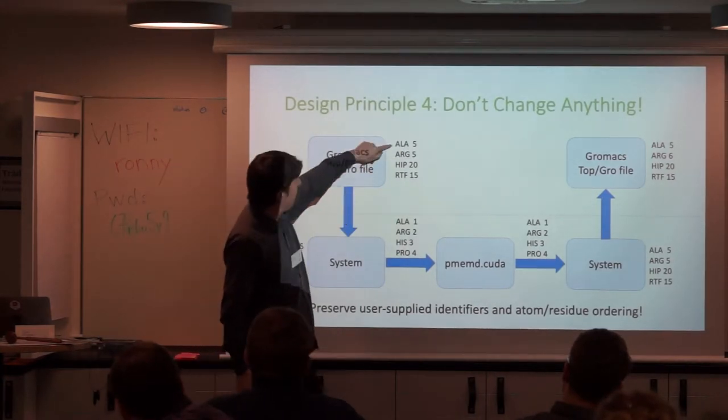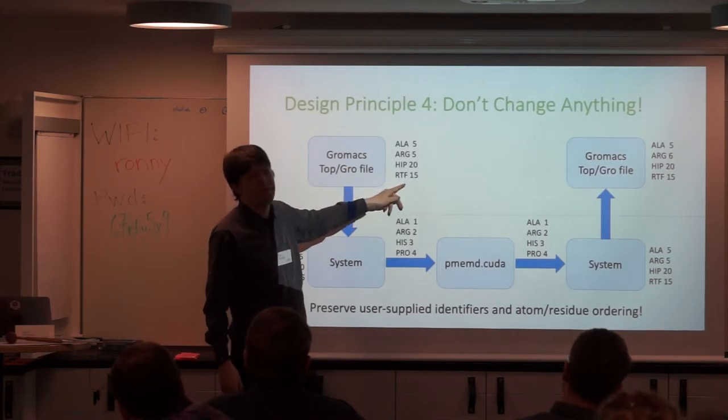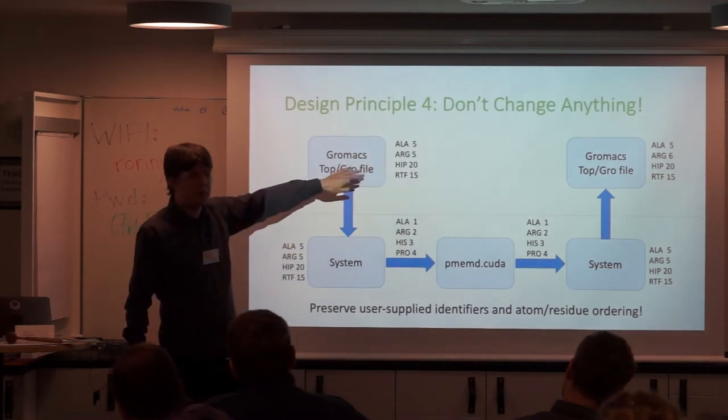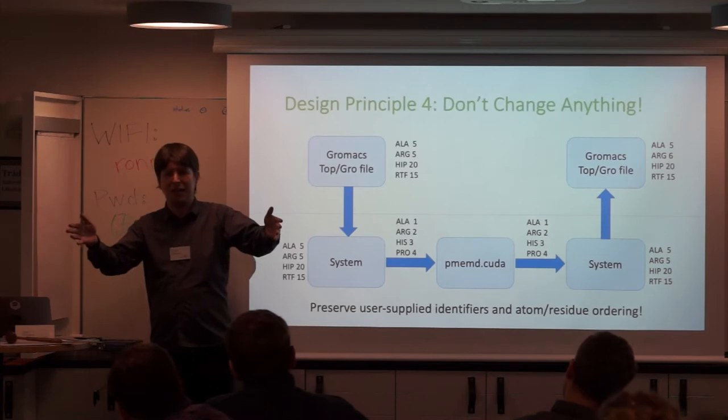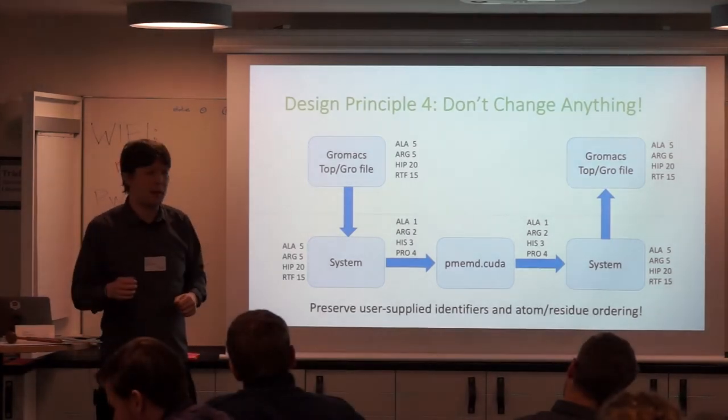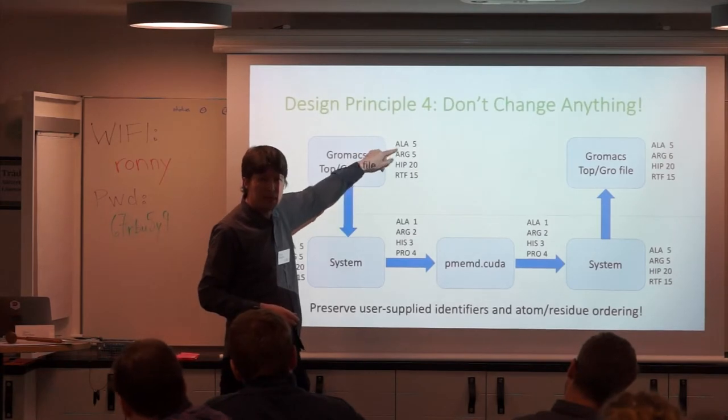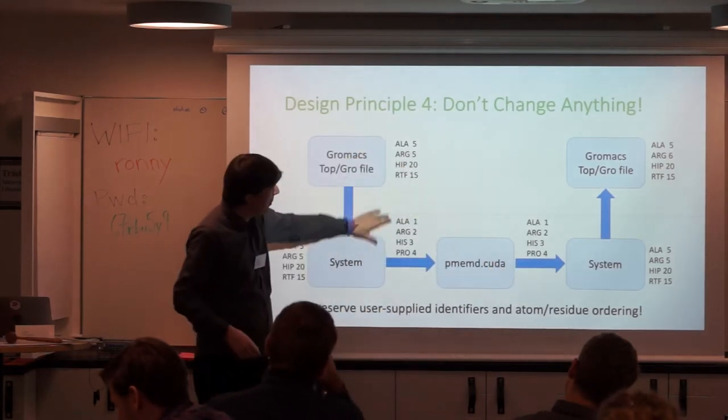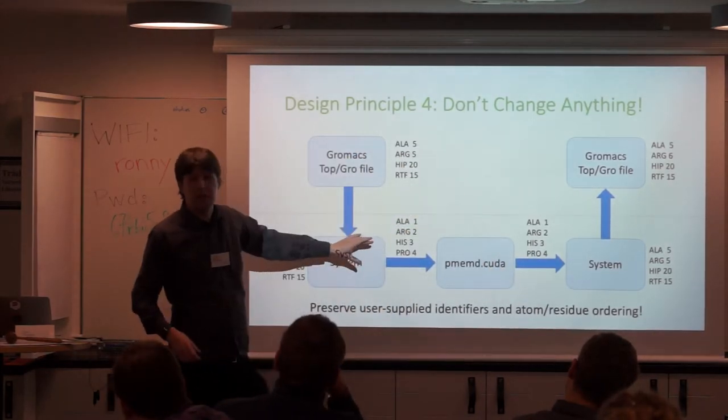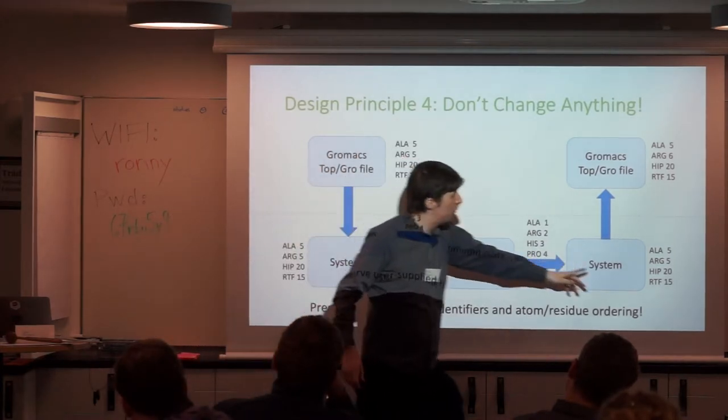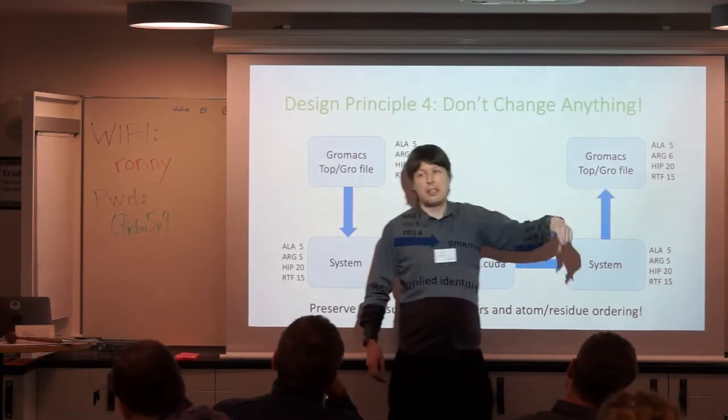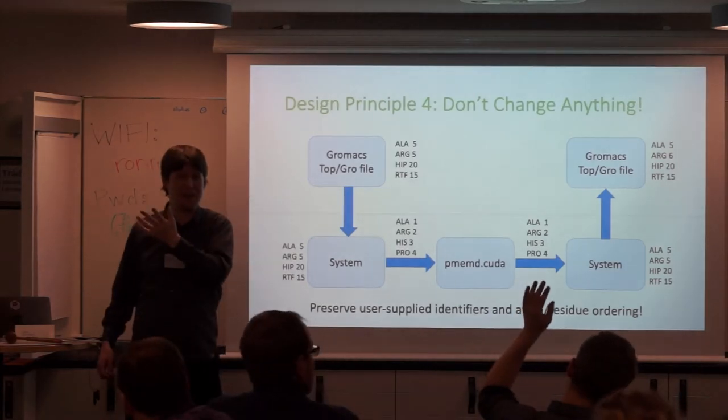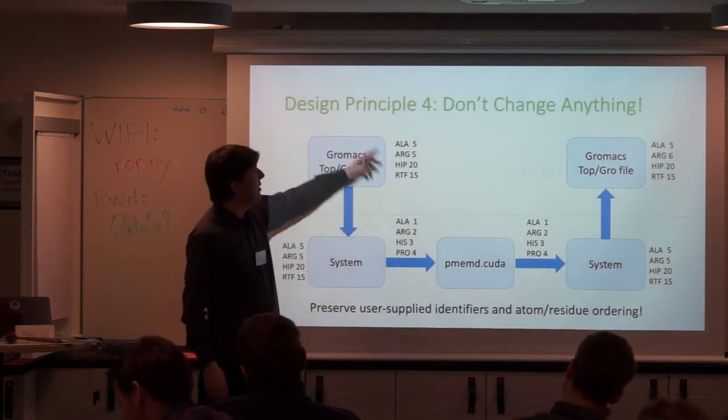But this goes further with don't change anything. This person's a bit silly. They've got alanine 5, arginine 5, HIP 20 and RTF 15 as their residue names and numbers. We all know that's rubbish. And indeed if you try and throw that through PMEMD CUDA, PMEMD will say that's not really nice because I want contiguously numbered residues and I want to clean everything up. But the user had a reason for being so silly with the way they were naming their residues. And so when you go through this process, you map what the original residue names and numbers were. So when you run it through the tool, you can restore what the user gave you. Again, you don't change the residue numbers. Who here has had it where they've run an MD package and suddenly all the residue numbers have changed behind the scenes and suddenly you've been analyzing the wrong things? Again, don't change anything.